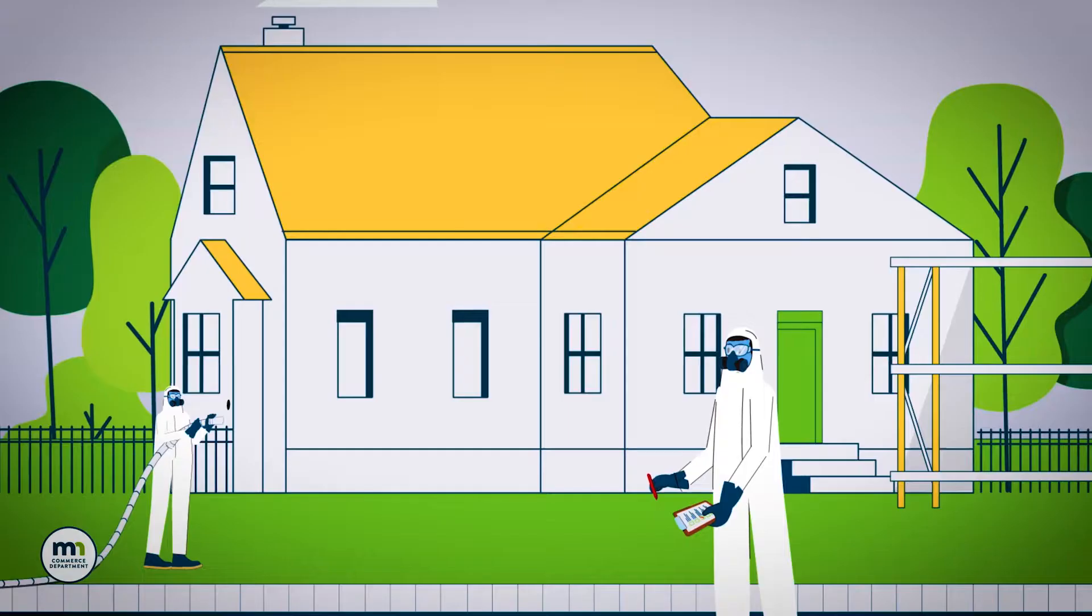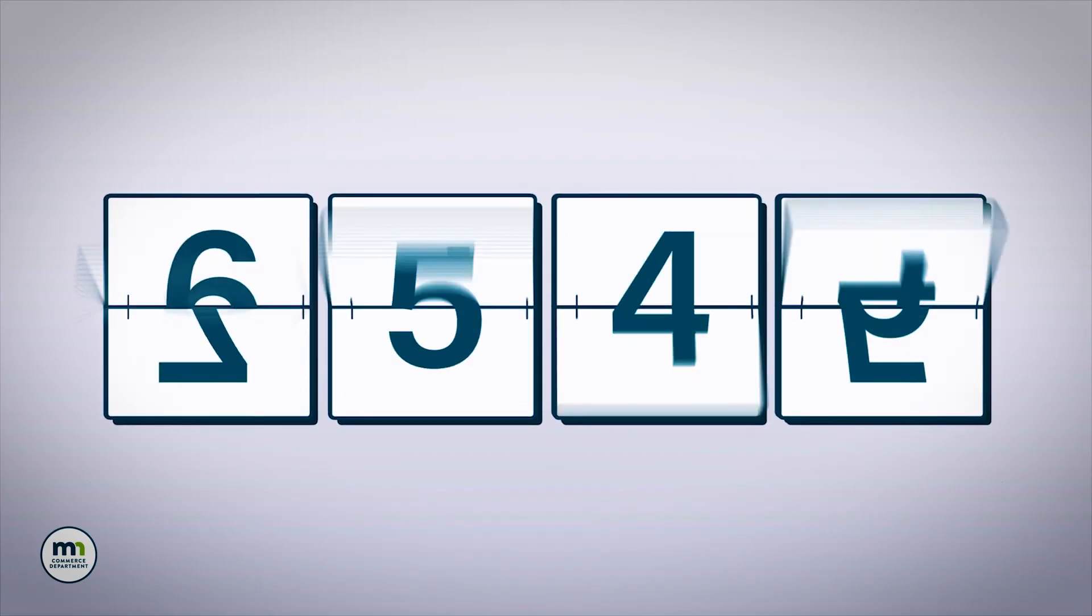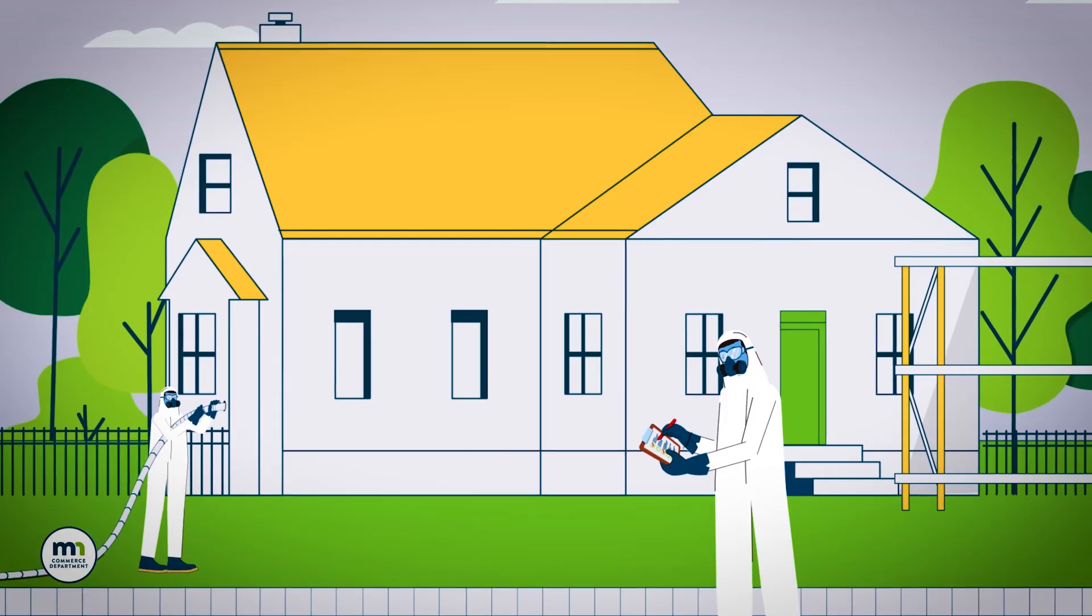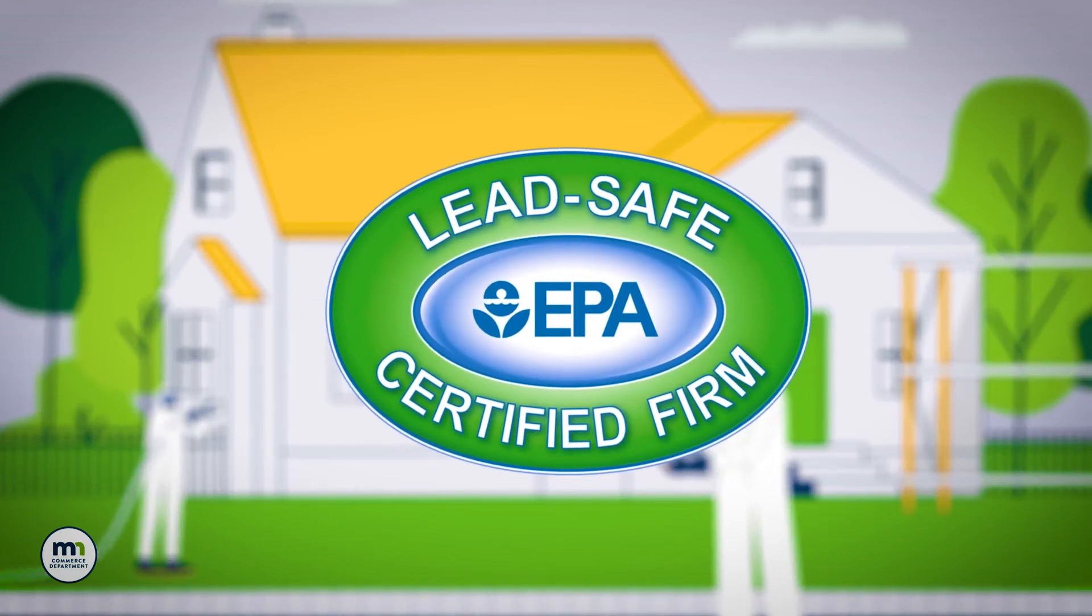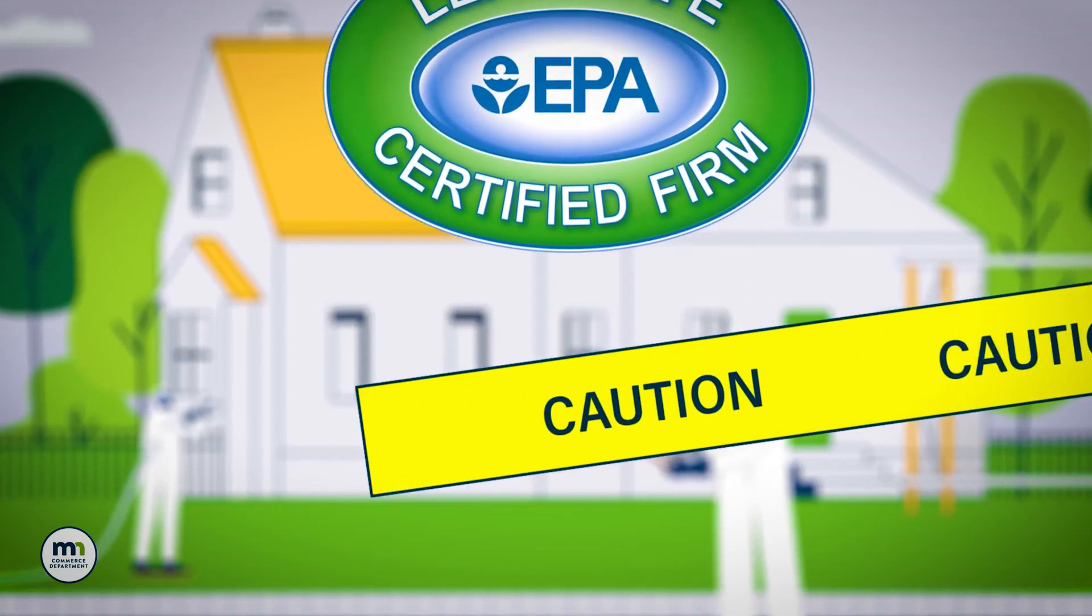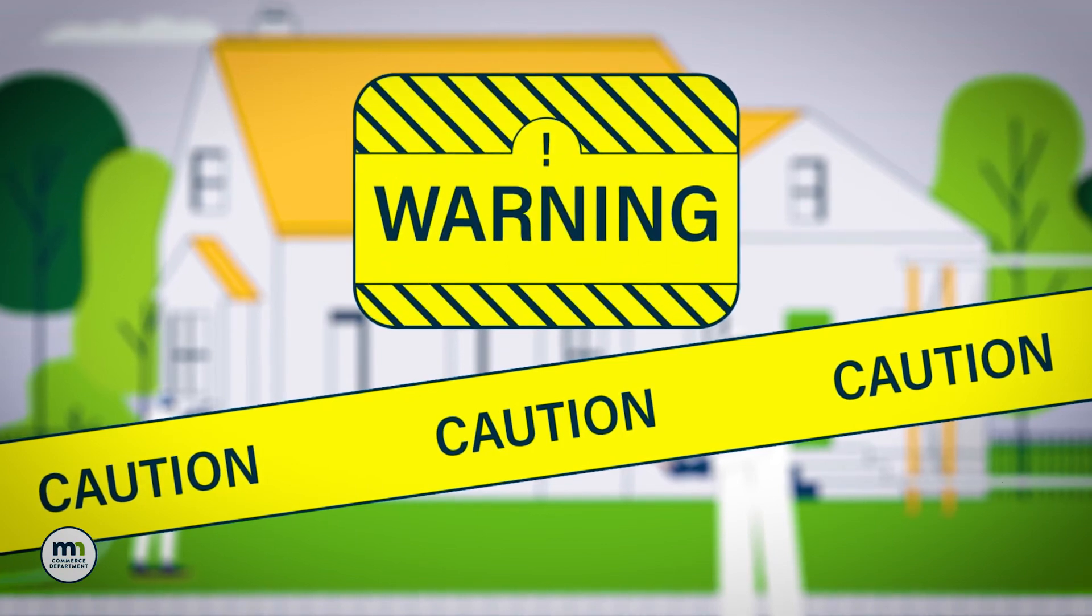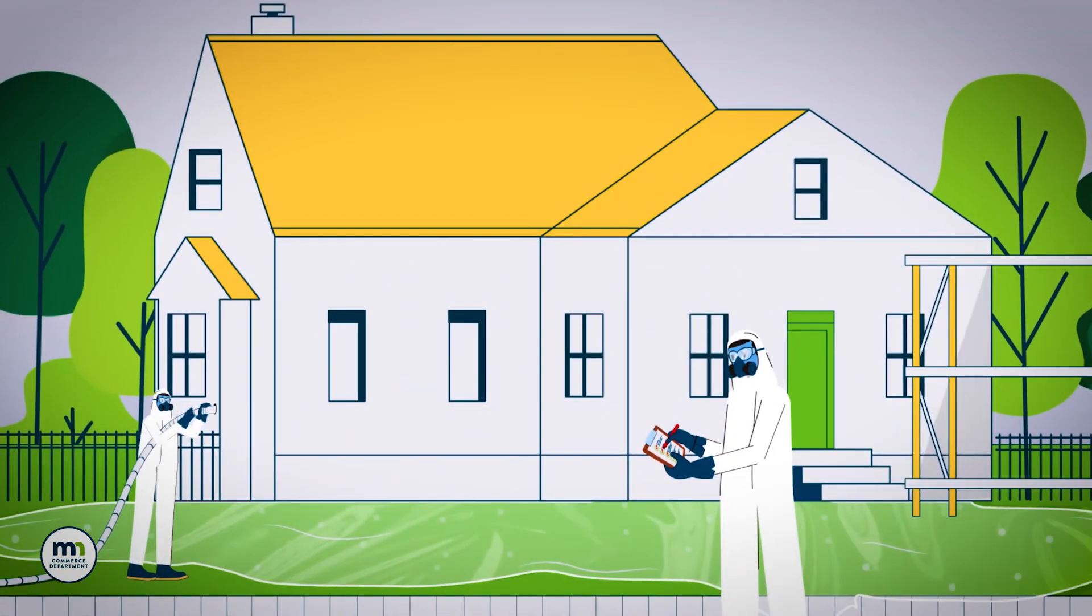And just so you know, if we add insulation to your house and if it was built before 1978, the contractor will follow the Environmental Protection Agency's lead-safe work practices. This includes adding caution tape, warning signs, and plastic on the ground to note unsafe areas to protect you and your family.